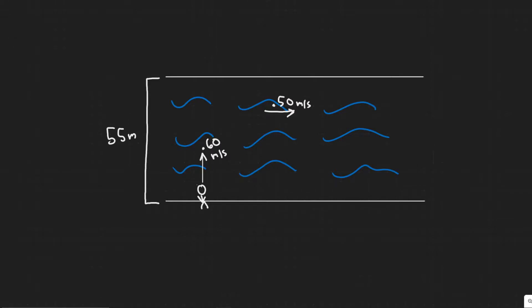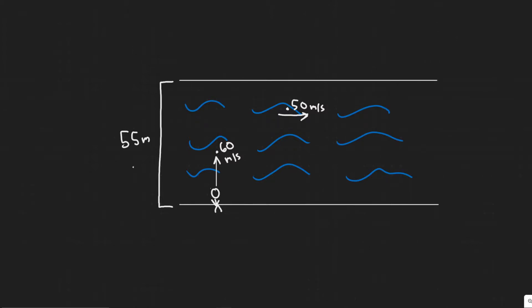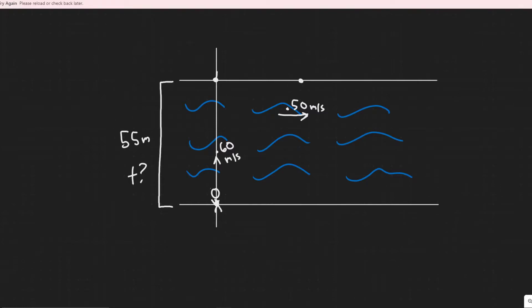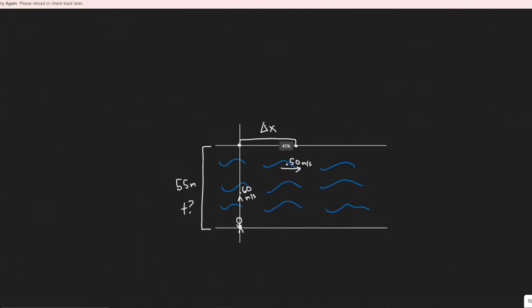We're going to be trying to find two things: the time it takes for her to reach the other side, so the amount of time it's going to take for her to go from here to there. Basically she's going to travel something like this and we're trying to find that time. And then we also want to find the distance she travels in the x direction, so relative to this starting point she's going to travel some distance and we want to find what that is, I'll call it delta x.